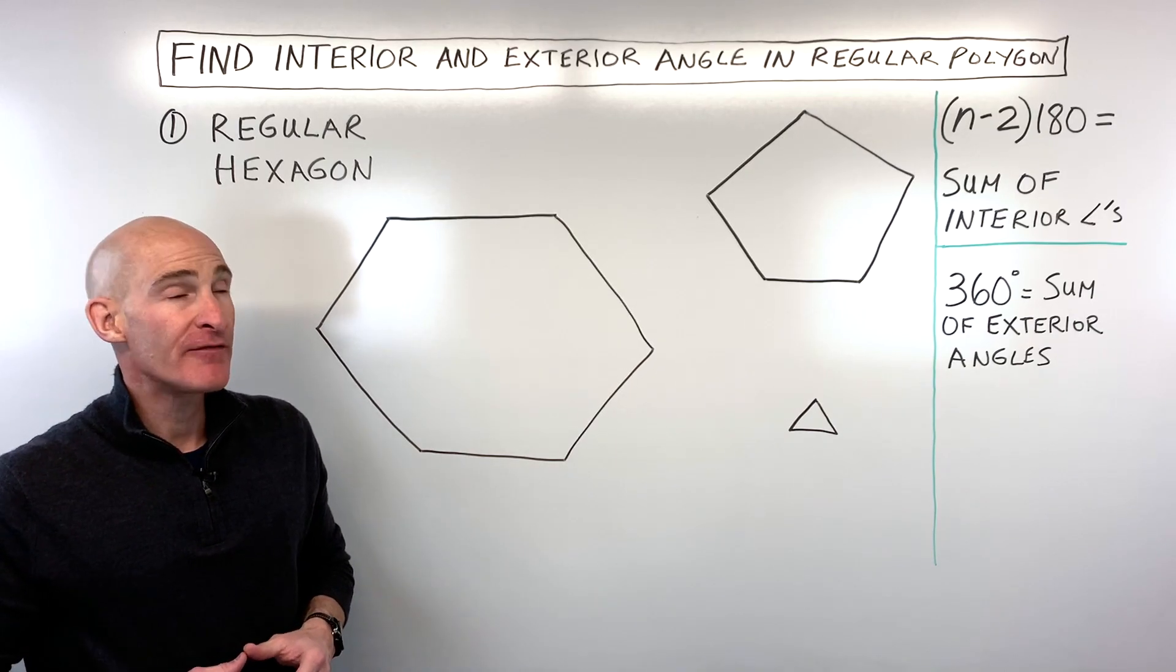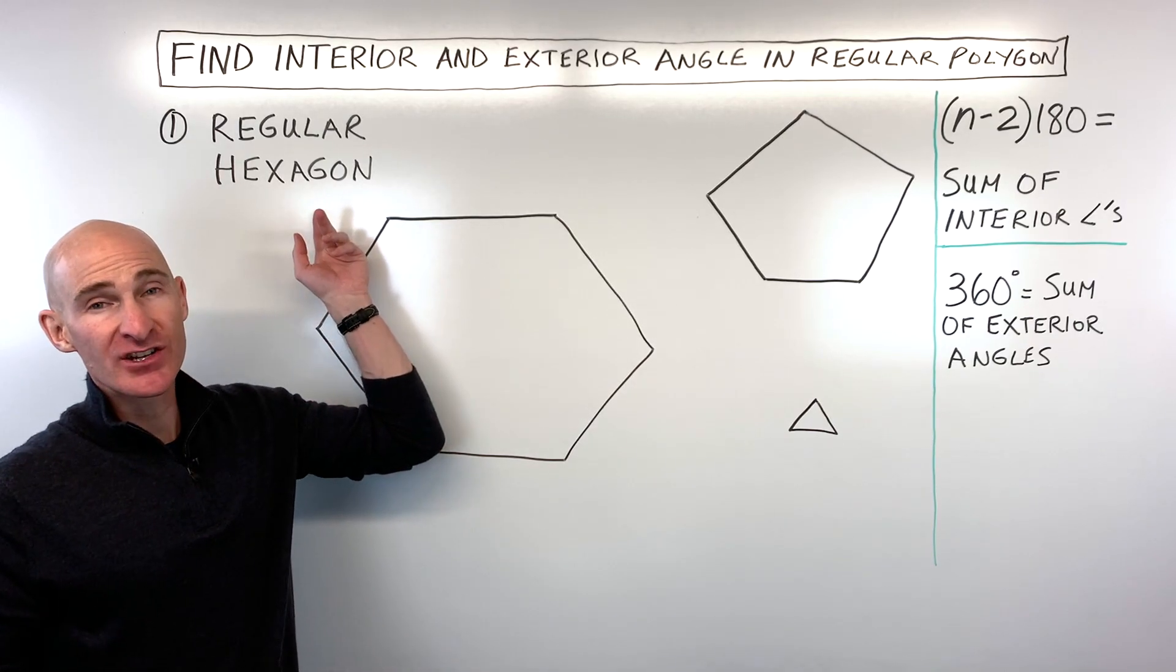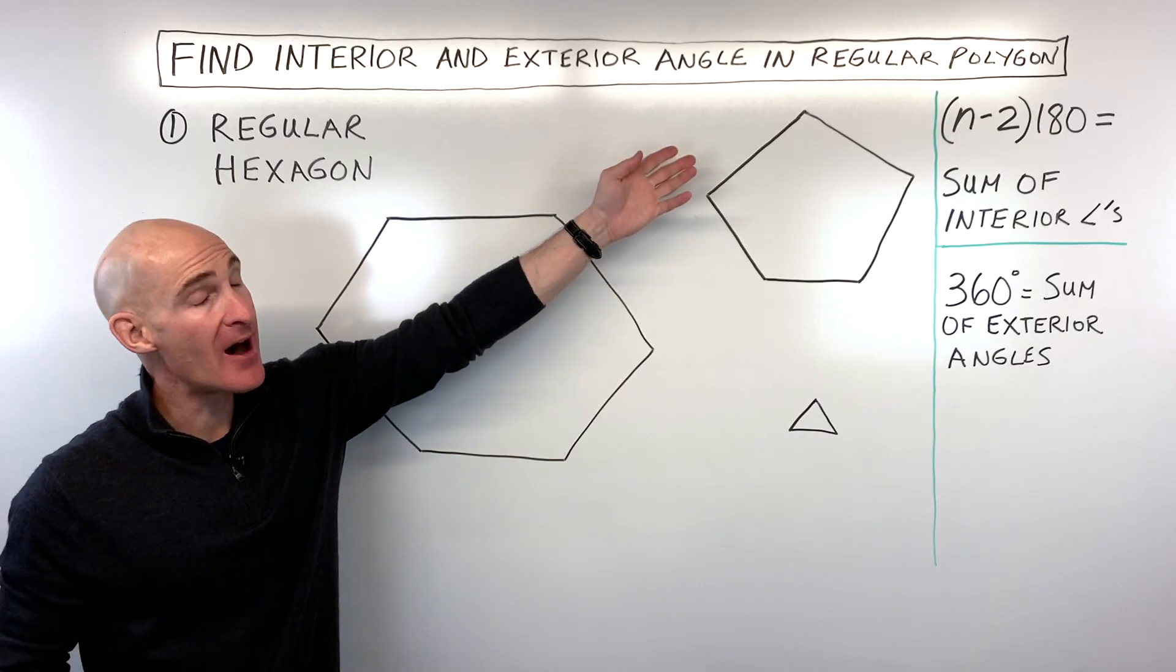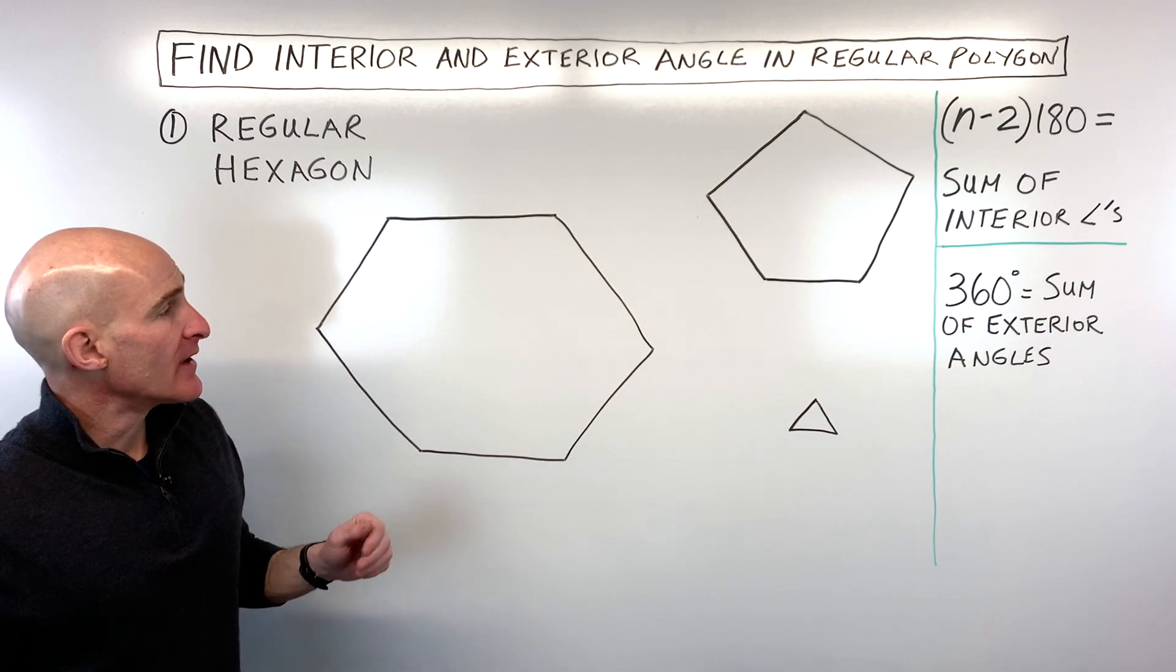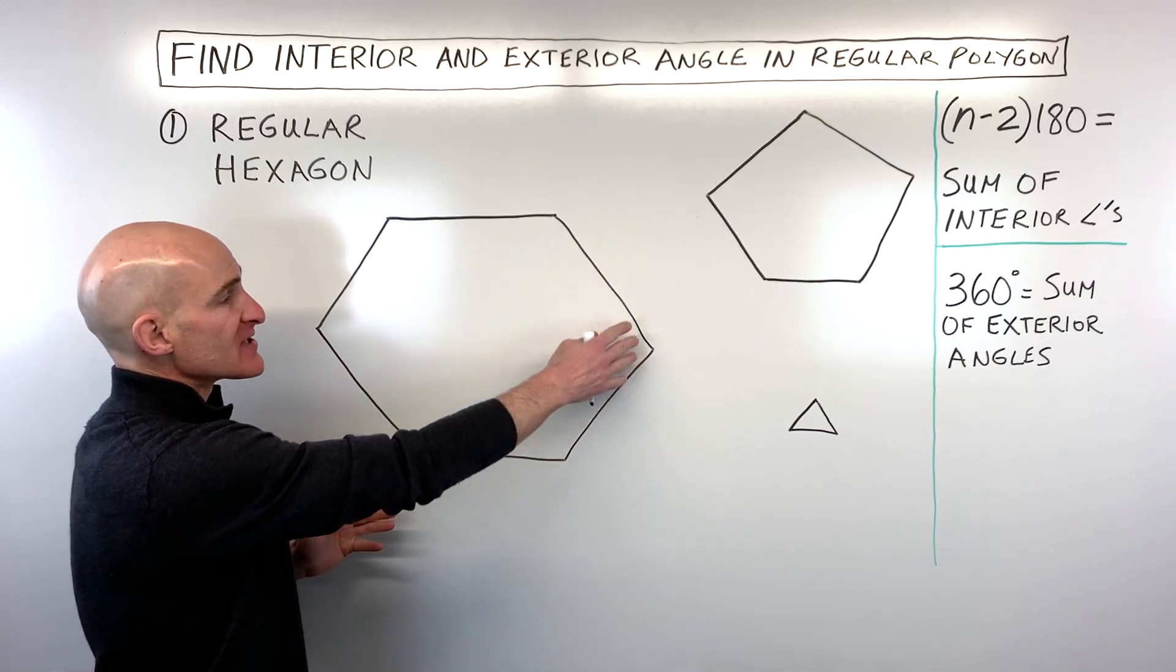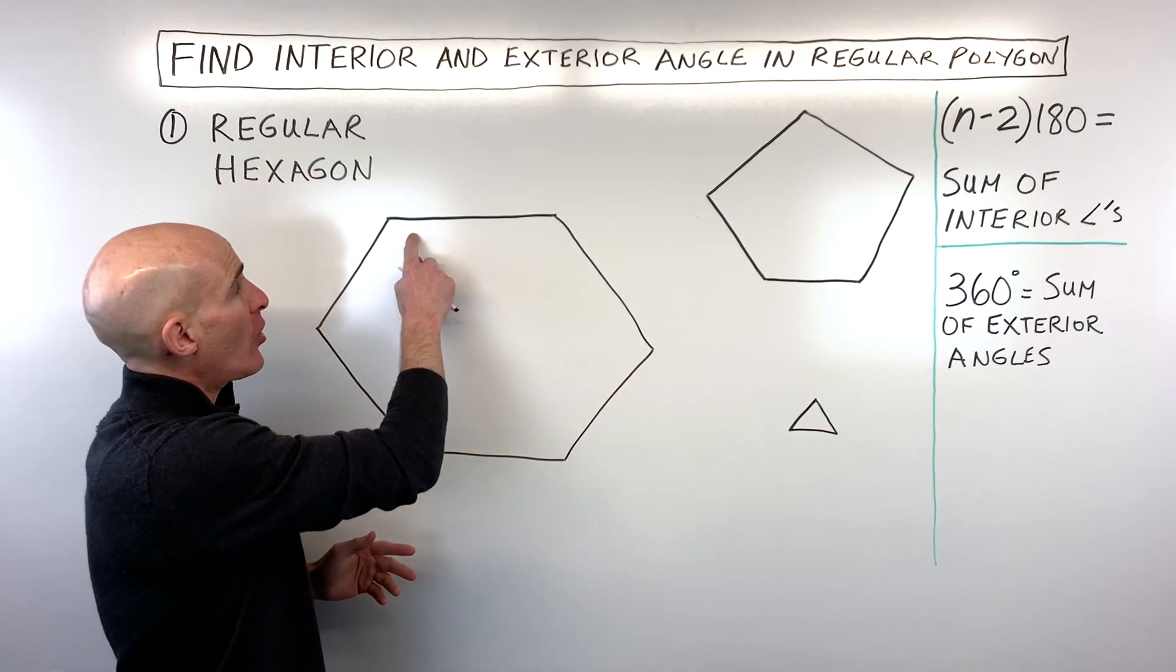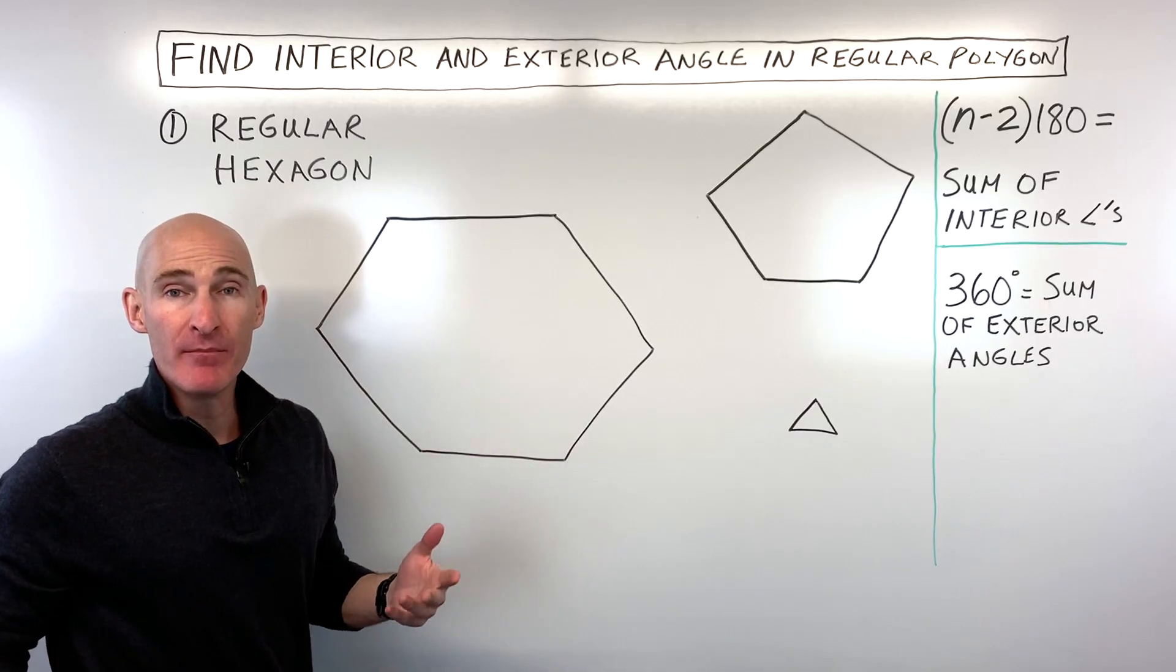In this lesson, we're going to talk about how to find the interior and the exterior angle in a regular polygon. So what exactly is a regular polygon? It's a polygon where all the sides are the same length and all the angles have the same measurement.